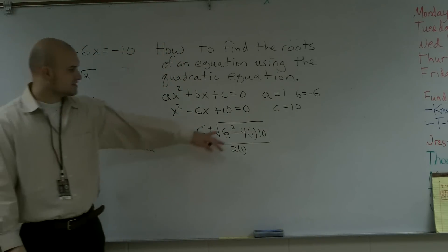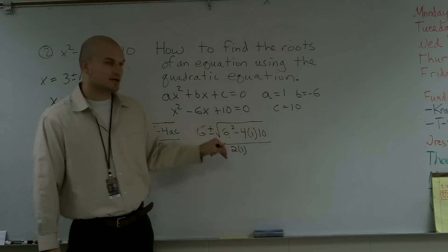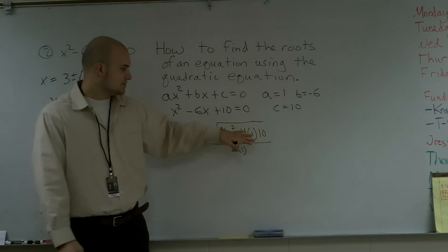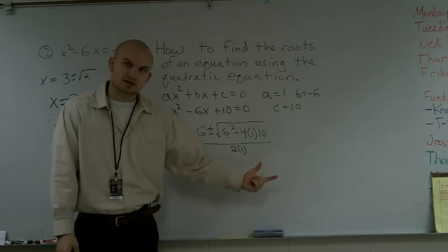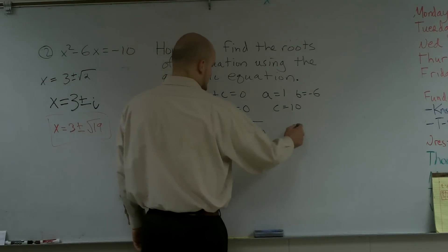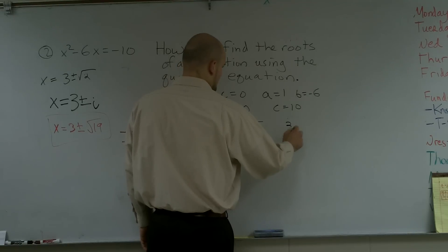And a lot of times what we like to do is we notice that the number under the radical is our discriminant. It's very easy. I like to go ahead and do this always first and kind of separately to see what exactly my solutions are going to be. So if I did my discriminant, I would have 36 minus 40.